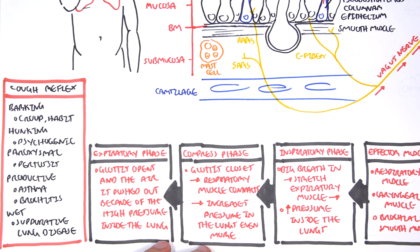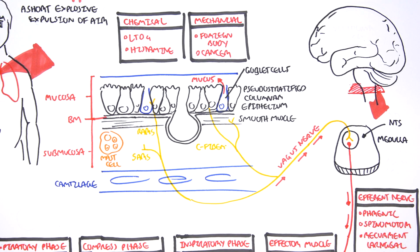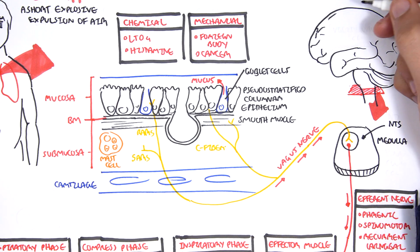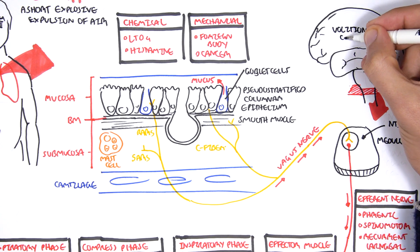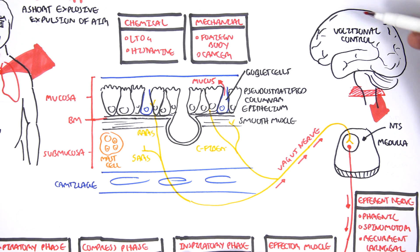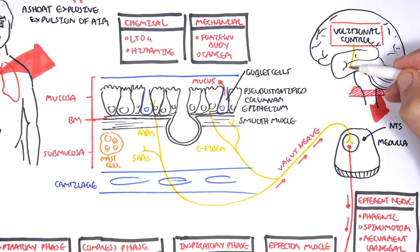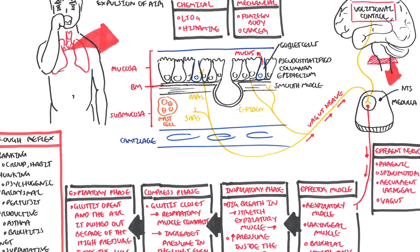And finally, cough can also be voluntary. Voluntary meaning that it can come from higher brain centers. So we can voluntarily cause a cough. Volitional control, which can send signals down to the medulla, and which will trigger the cough response. So I hope that made sense, and I hope you enjoyed this video on the physiology of cough. Thank you for watching. Bye.